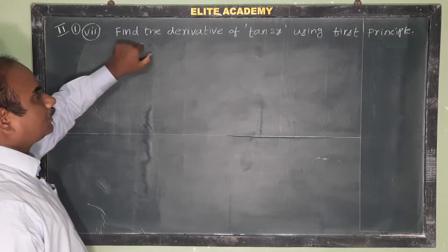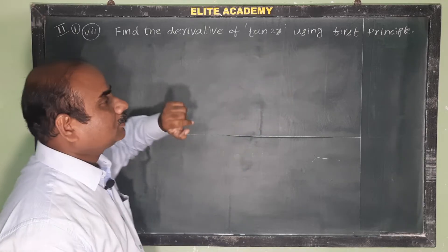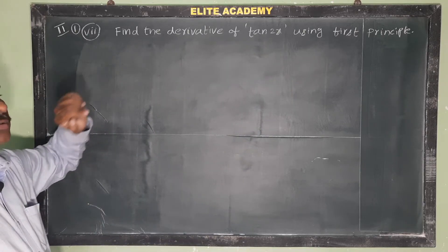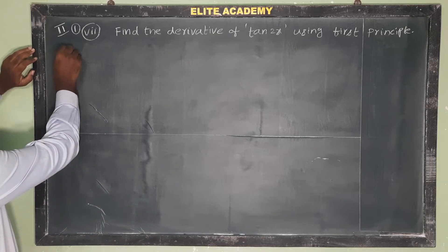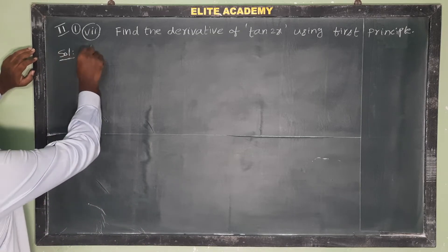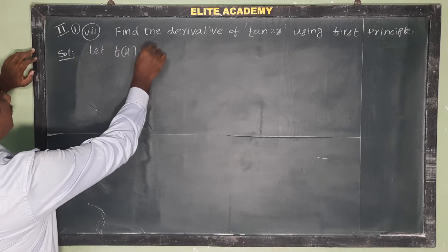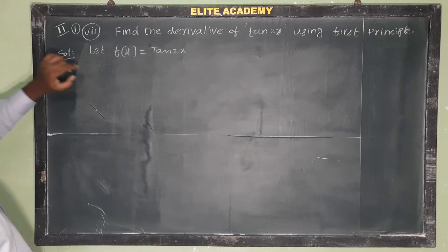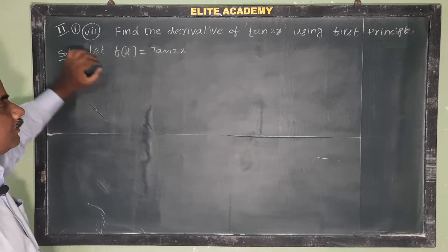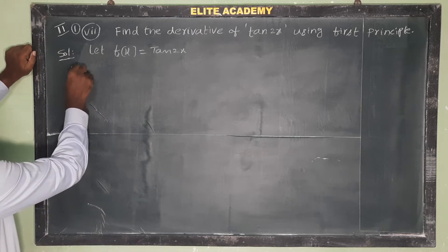Okay, find the derivative of tan 2x using first principle. So let us see how to calculate this solution. Let f(x) equals tan 2x, so the derivative of this function f(x) using first principle.